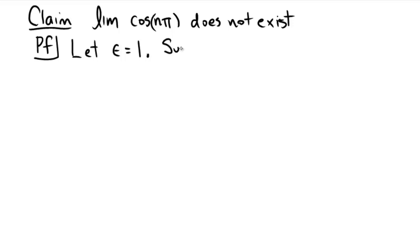Okay, we're going to suppose that the limit of cosine n pi does exist, and we're going to say that it's equal to a.